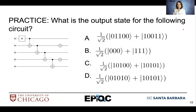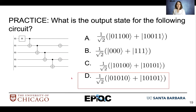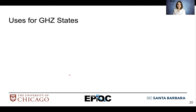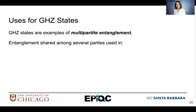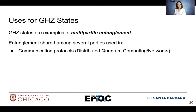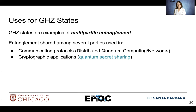For the following circuit, we see a 5-qubit GHZ circuit, which gives us a maximally entangled 5-qubit state as an extension of the same entangled state. After adding NOT gates, the second and fourth qubits are going to flip their values, giving us state D as the output. GHZ states have many use cases as examples of multipartite entanglement — for example, in communication protocols that use entanglement shared among several parties, and in quantum cryptography applications.